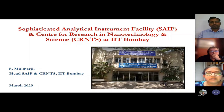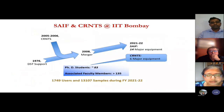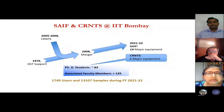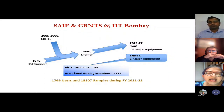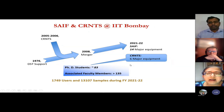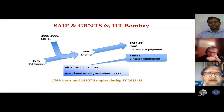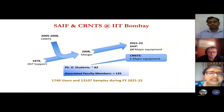I will briefly introduce SAIF — the Sophisticated Analytical Instrumentation Facility — and the Center for Research in Nanotechnology and Science (CRNTS) at IIT Bombay. SAIF has been existing since 1976, and CRNTS started around 2005. The two were merged in 2008. We have PhD students under CRNTS, and we have numerous sophisticated instruments funded by DST. We have more than 1,700 users who used our facilities last year, and we received more than 13,000 samples during the year.